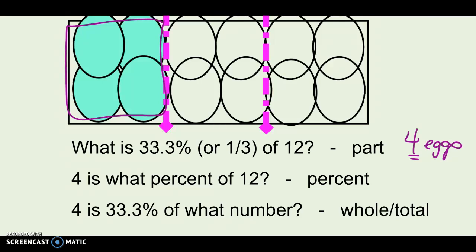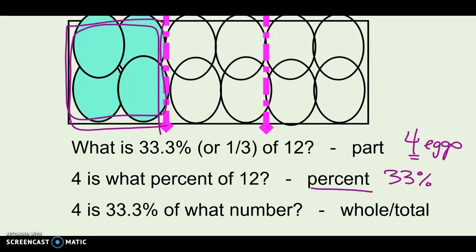Four is what percent of 12? So I could be asking for the percent. Four out of 12 looks like it's one third, or 33 percent. So I could ask a question where I'm looking for the percent. Or I could say four is 33 percent of what number — this four eggs is one third of the whole dozen — where I'm looking for the whole or the total.